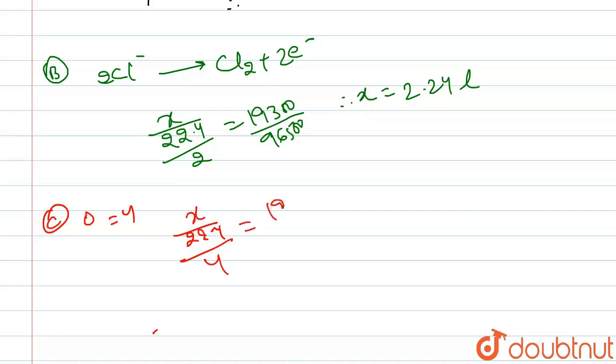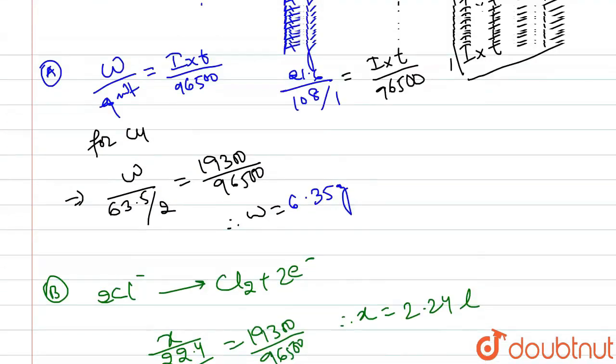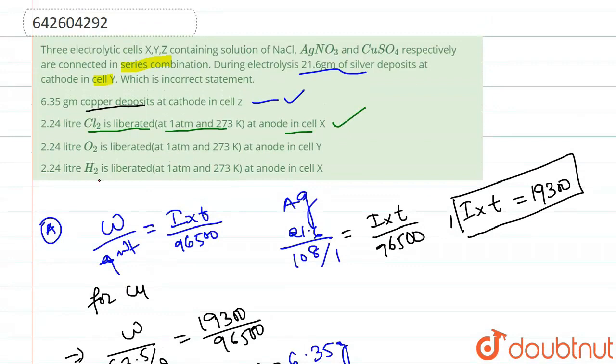So x equals to 4.48 liter. The value of x is equal to 4.48 liter. What we can see from here is the value given here is 2.24 liter O2 is liberated at anode, but the value actually liberating is 4.48 liter. So the correct option is option B because it is saying to find the incorrect option, and this is incorrect.